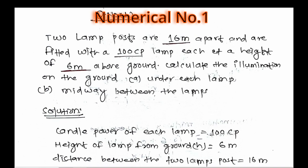Hello everyone, welcome to the first problem on illumination. Two lamp posts are 16 meters apart and are fitted with 100 candlepower lamps each at a height of 6 meters above ground. Calculate the illumination on the ground under each lamp and midway between the lamps.